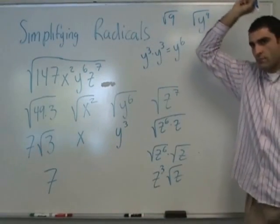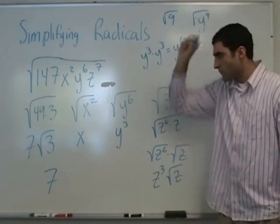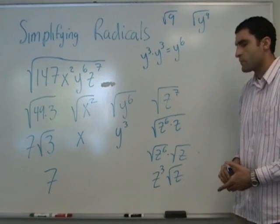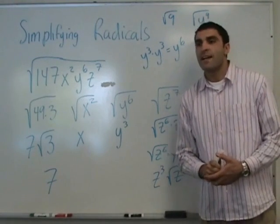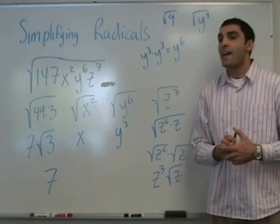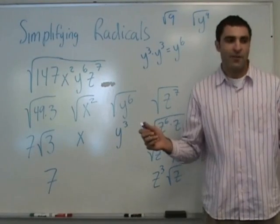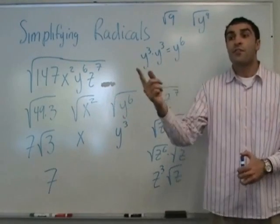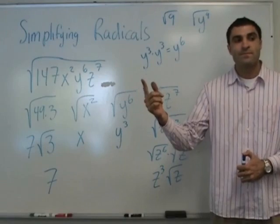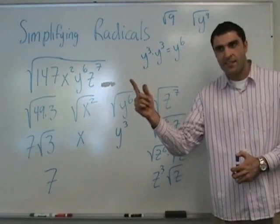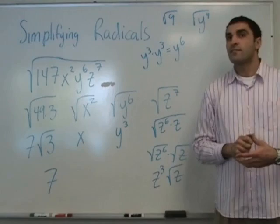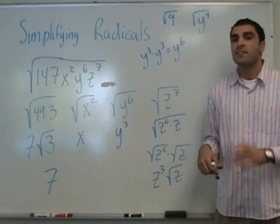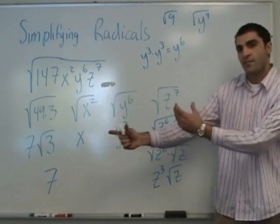If it's z to the 7th, would you suggest we take the number before it and 1? Yes — make it the highest even power. Z to the 7th becomes z to the 6th and another one. Z to the 13th would be z to the 12th times z. Z to the 101 would be z to the 100, giving z to the 50 square root of z.